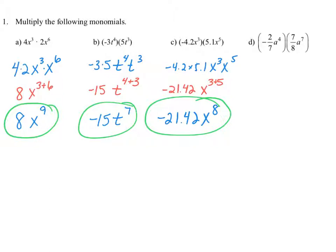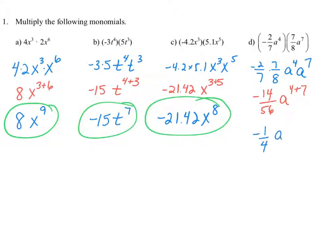We begin by multiplying the coefficients: negative 2 over 7 times 7 over 8, and then multiply the variables: 8 to the fourth times 8 to the seventh. That gives negative 14 over 56, and we add the exponents for 8 to the fourth plus seventh. Simplifying negative 14 over 56 by dividing by 14 gives negative one-fourth, and 8 to the eleventh power. Final answer: negative one-fourth times 8 to the eleventh power.